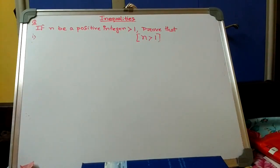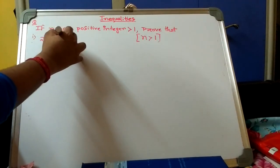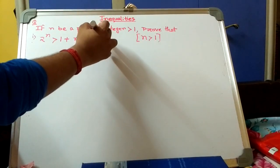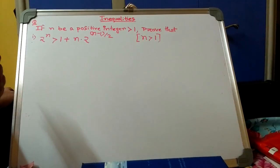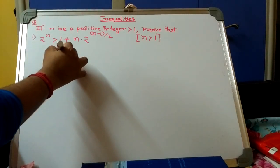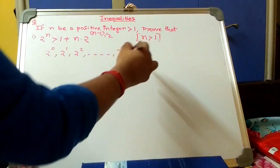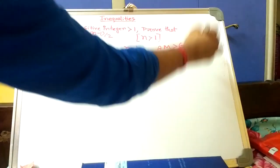The next problem is: 2^n > 1 + n · 2^((n-1)/2). Consider n positive numbers: 2^0, 2^1, 2^2, ..., 2^(n-1). Applying AM ≥ GM, we get (2^0 + 2^1 + 2^2 + ... + 2^(n-1)) / n ≥ (2^0 · 2^1 · ... · 2^(n-1))^(1/n).